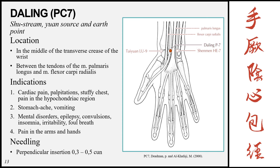The next point is Da Ling, pericardium 7. This is the Shu-stream, yuan-source, and earth point of the meridian. It is located in the middle of the transverse crease of the wrist, between the tendons of the palmaris longus and the flexor carpi radialis — the same two muscles as the previous points, the difference being the location at the wrist crease. Being a yuan-source point, it has a greater action on its corresponding organ, the pericardium. Indications include cardiac pain, palpitations, stuffy chest, and hypochondriac pain; stomach ache or vomiting; mental disorders, epilepsy, convulsions, insomnia, irritability, and foul breath; and pain in the arms and hands. Insertion is perpendicular, 0.3 to 0.5 cun.